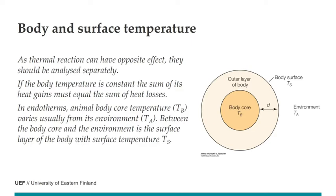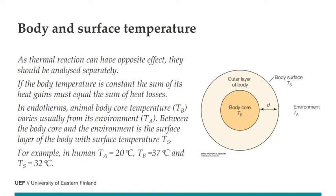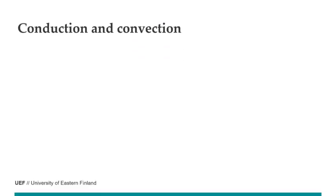In endotherms, body core temperature is often very different from the environment — in arctic areas the body is much warmer than the surroundings. Between the body core and the environment there is an outer surface layer with a surface temperature different from core temperature. For humans in an office at about 20°C, the body core temperature is 37°C, but measured directly at the surface it is 32°C.